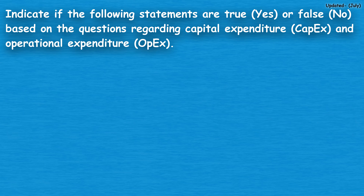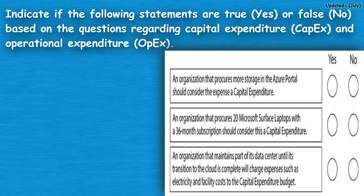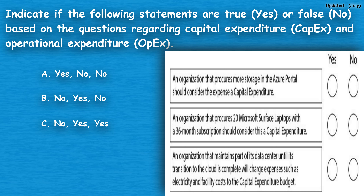The next question: indicate if the following statements are true (yes) or false (no) based on the questions regarding capital expenditure (CapEx) and operational expenditure (OpEx). Option A: yes, no, no. Option B: no, yes, no. Option C: no, yes, yes. Option D: no, no, no, yes.